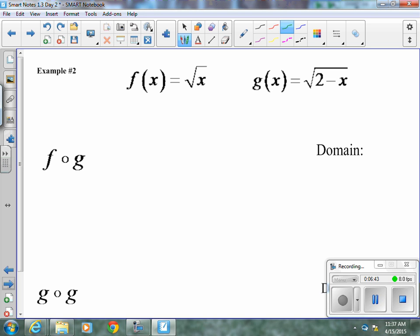Example 2. Before we start, let's get these domains. So this domain, x is greater than or equal to 0. This one, 2 minus x, has to be greater than or equal to 0. So 2 has to be greater than or equal to x on g. And for f, x is greater than or equal to 0.